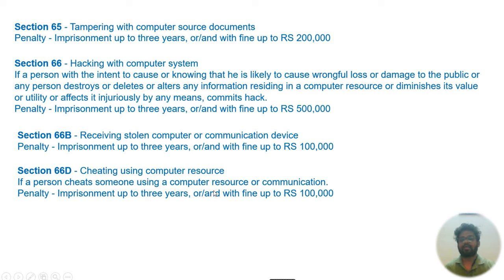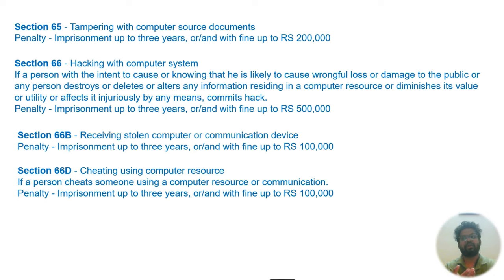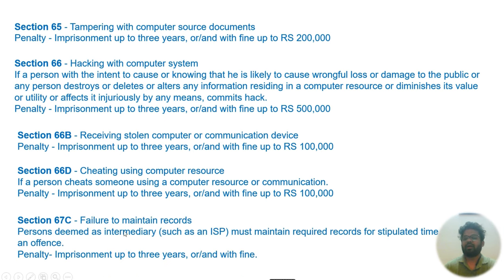Before buying a second-hand phone, verify it. When selling your phone, format it at least four or five times — the more you format, the harder it is to recover data. Section 66D: cheating using a computer resource or communication device is a crime — three years of jail and one lakh fine. Cheating can mean texting someone to fool, scam, or bluff them — financial or personal — and this section even applies to relationship-based cheating.